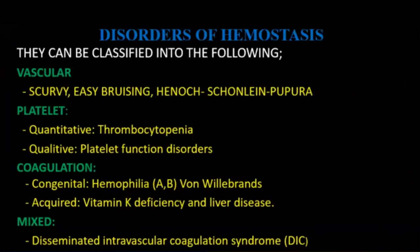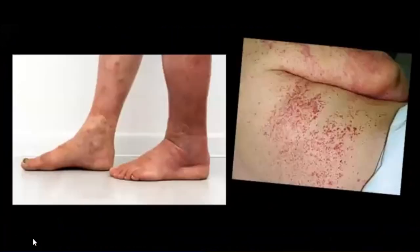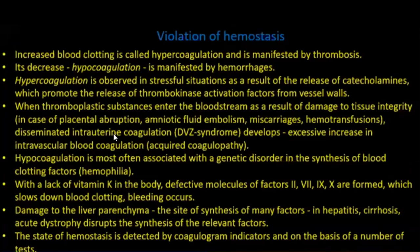Disorders of hemostasis can be classified as: vascular, platelet, coagulation, and mixed types. Increased blood clotting is called hypercoagulation and manifests by thrombosis. Decreased clotting is called hypocoagulation and manifests by hemorrhages.